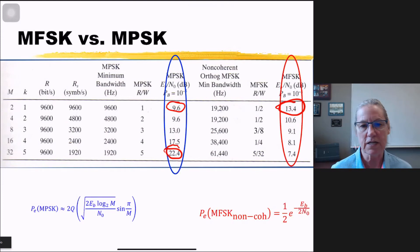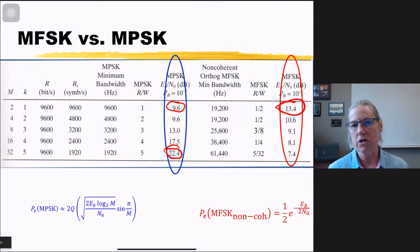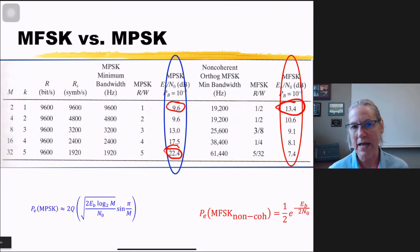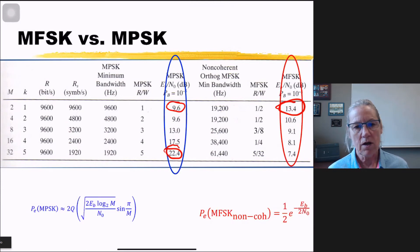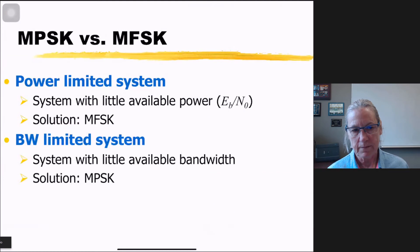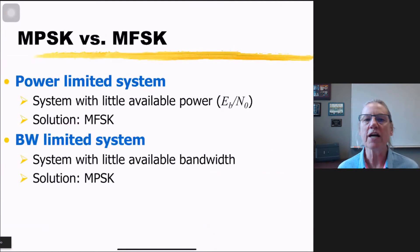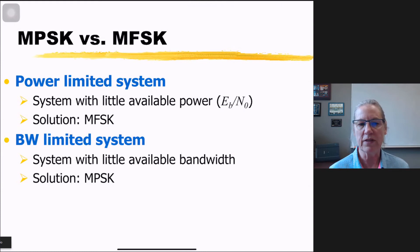These very different behaviors show that growing the constellation achieves very different goals for the two modulation formats. This leads us to the concepts of a power-limited system versus a bandwidth-limited system.